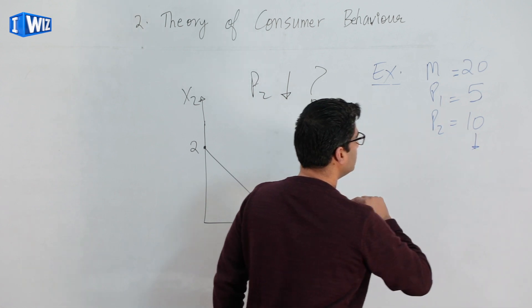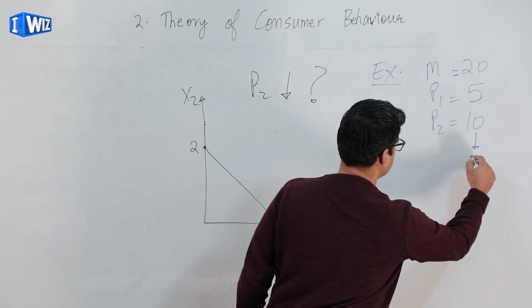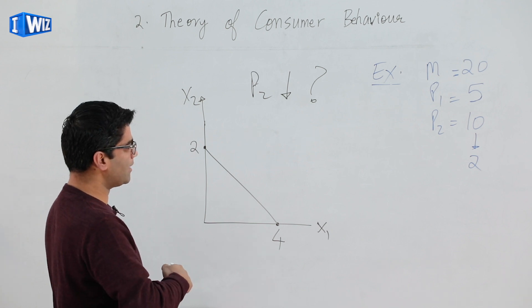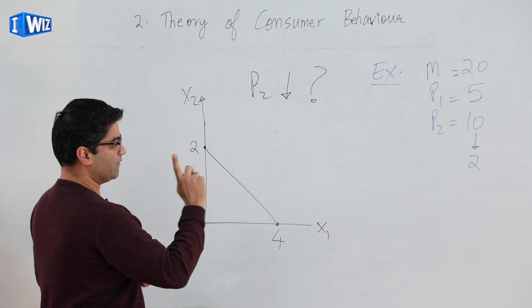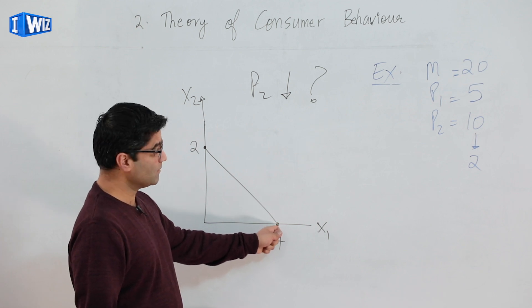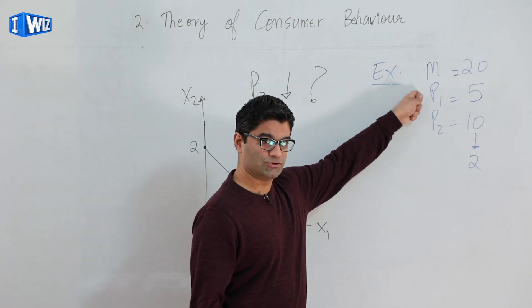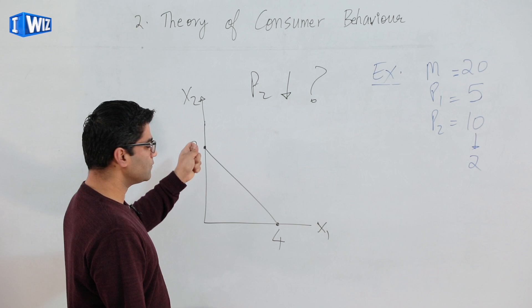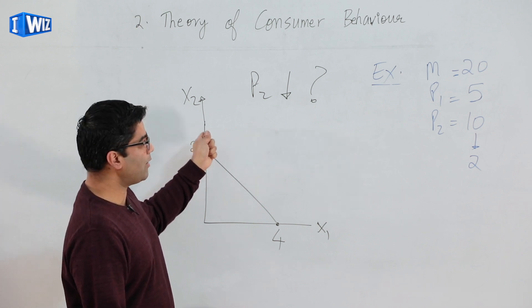Let's say the price of good two goes from ten to two. The graph is not drawn to scale, so bear with me there. If the price of good two goes down to two, this number remains the same because twenty divided by five has not changed, but the amount of good two you can buy now has gone up.